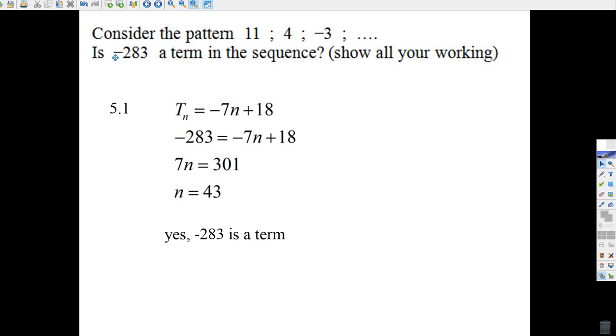Now all we do is take negative 283 and put it in for a term. We're going to see if this term exists. So we put minus 283. We add it to 18, we get 301. We divide by 7, and we get 43. So yes, negative 283 is a term.